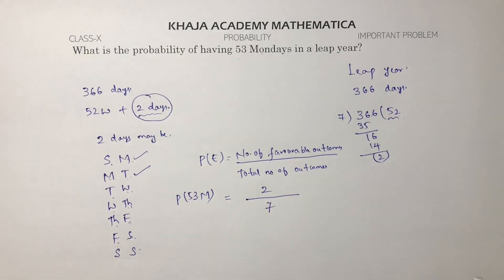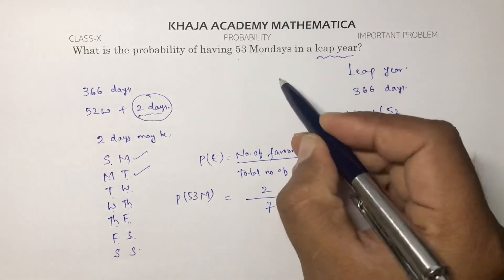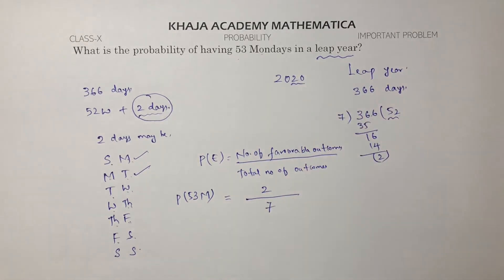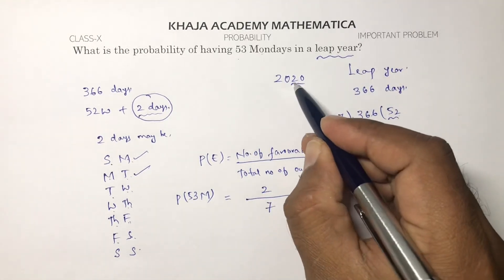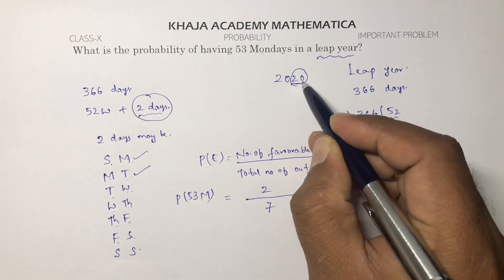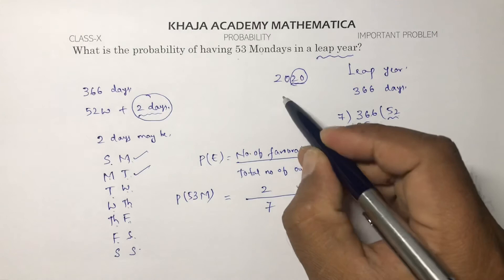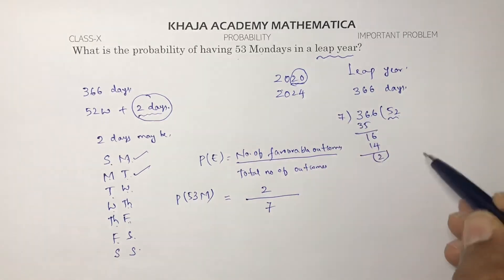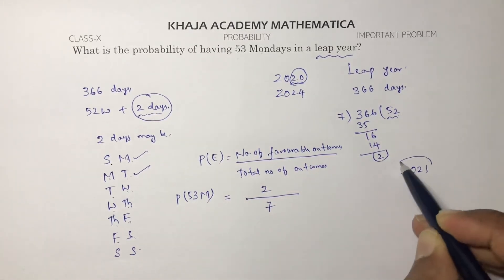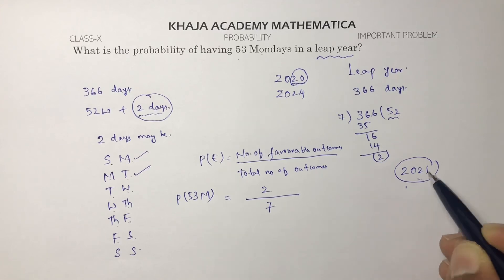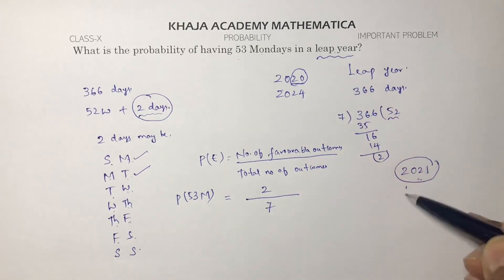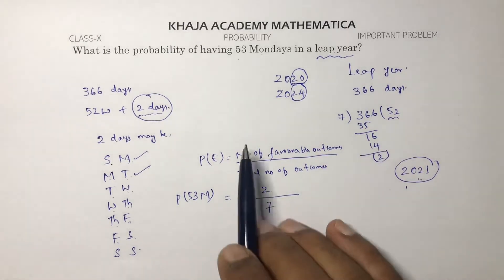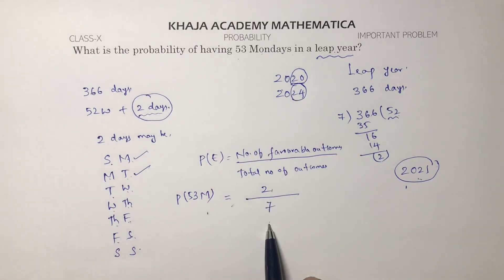Instead of saying leap year, they may give a specific year number. If a number is divisible by 4, it is a leap year. For example, 2020 and 2024 are leap years, while 2021 is not. So the probability of getting 53 Mondays in a leap year is 2/7.